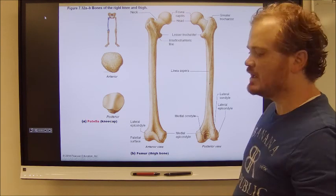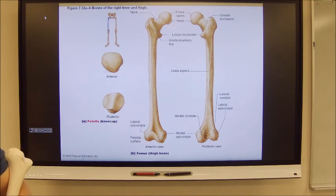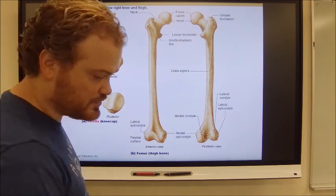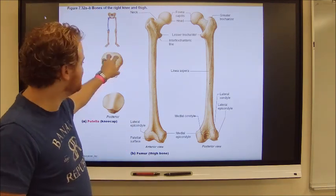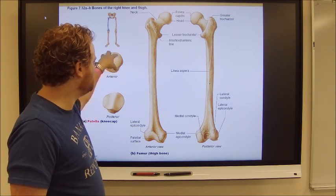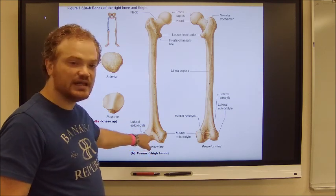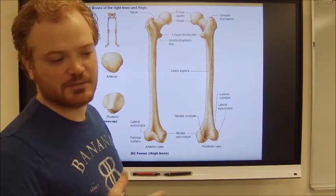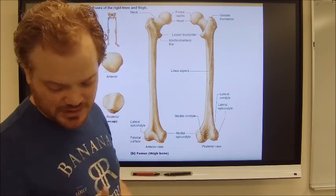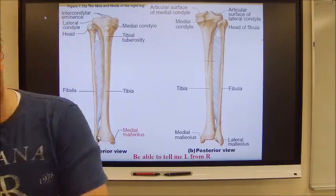The patella is a sesamoid bone. Sesamoid bones are found within ligaments or tendons and allow articulation on a surface so the tendon itself doesn't rub on that surface. If the tendon rubbed directly against the knee, it would cause osteoarthritis by tearing away the cartilage. The patella prevents that — it's a protective measure.